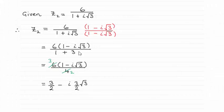Hi there. For this question, we're given the complex number Z₂ = 6/(1 + i√3) and asked to write it in the form a + ib, where a and b are real numbers. You can see the answer is 3/2 - i(3/2)√3.